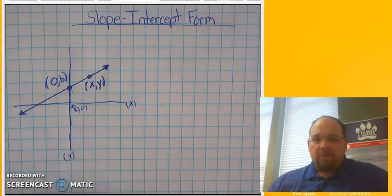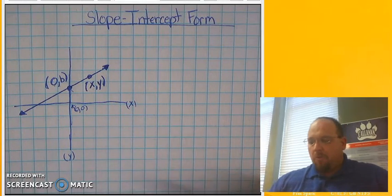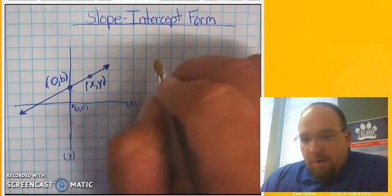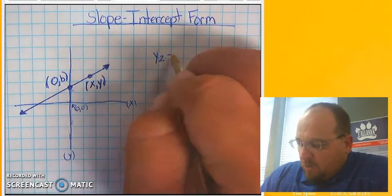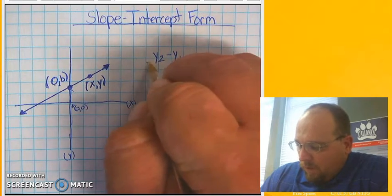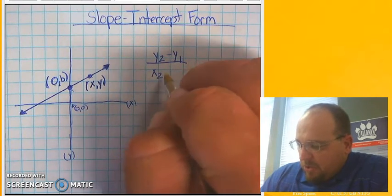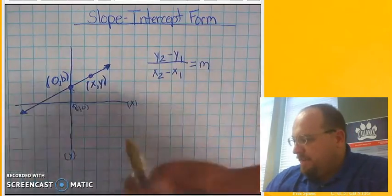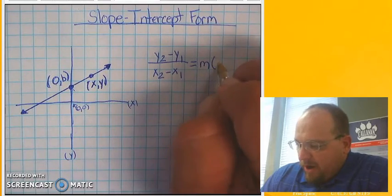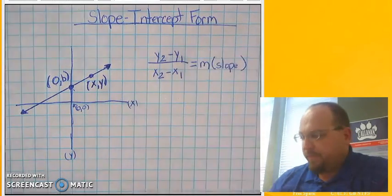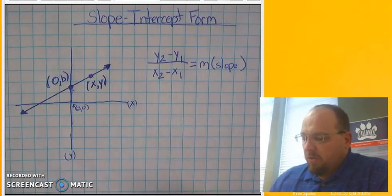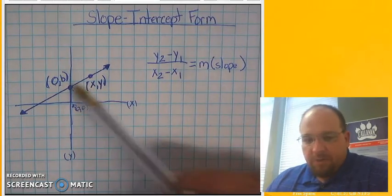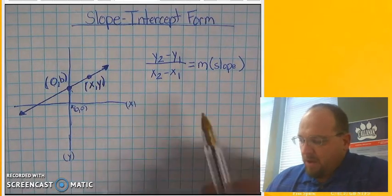And what we're going to do is I'm going to show you how we come up with the slope intercept form based on that. We know that we have a formula, y2 minus y1 over x2 minus x1 will give me m, which again, m is just a variable that we identify as the slope. So how we get slope intercept form is we simply substitute our two points in into the slope formula.